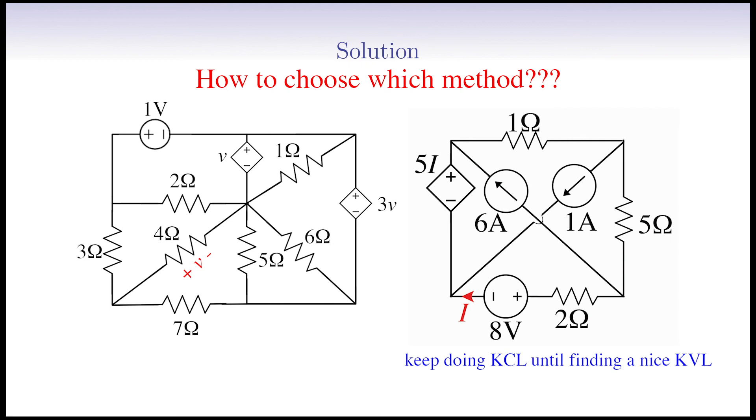On the other hand, we see several voltage sources that are connected to different nodes on the left circuit. This already makes our life easier to identify the voltage differences of some nodes. Also, the desired unknown variable is a voltage connected between two nodes. So all these clues pushed us to think that it's much easier to determine the voltage of the nodes in terms of the unknown variable rather than determining the currents running through the branches. That's why we choose the method, keep doing KVL until finding a nice KCL for this circuit.